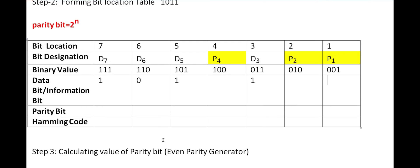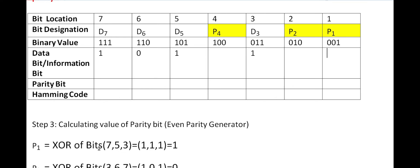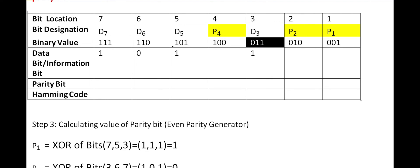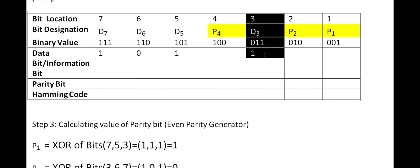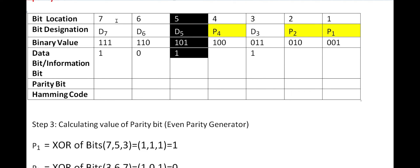Now our aim is to find parity bits P1, P2, and P4 using XOR operations. For P1, we look at the LSB (bit 0) of each position's binary equivalent. Positions having 1 in the LSB are: 3 (011), 5 (101), and 7 (111). So we perform XOR of bits at positions 3, 5, and 7. The corresponding data values are: position 3 has 1, position 5 has 1, position 7 has 1.